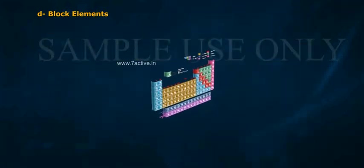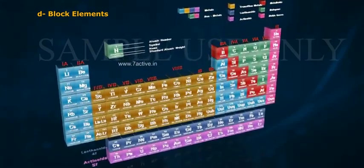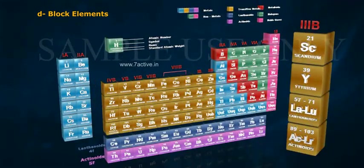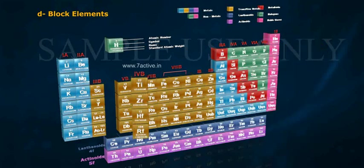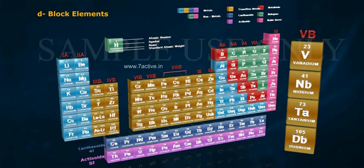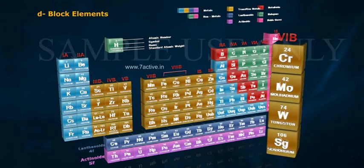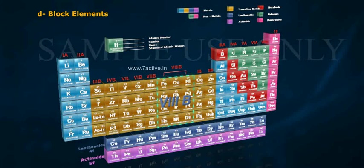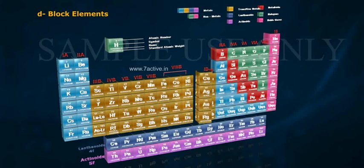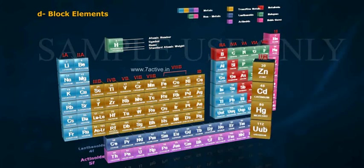D-block consists of 10 groups: 3B, 4B, 5B, 6B, 7B, 8B, 1B and 2B.